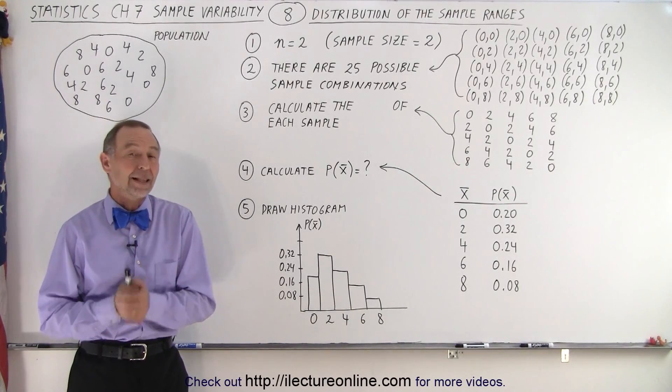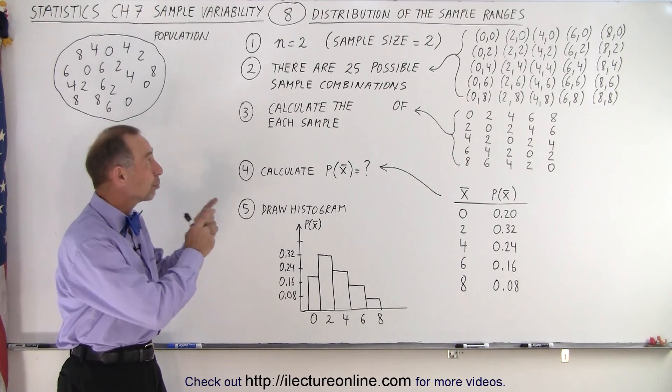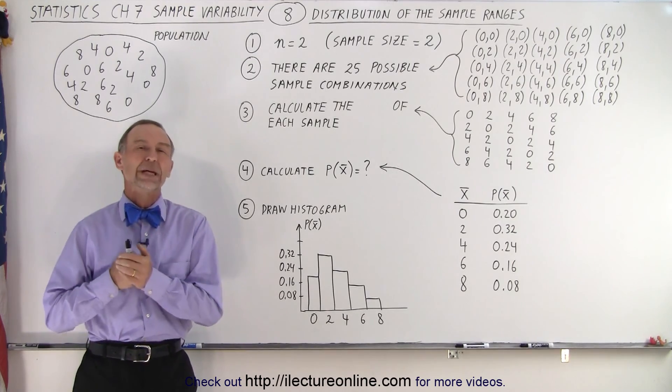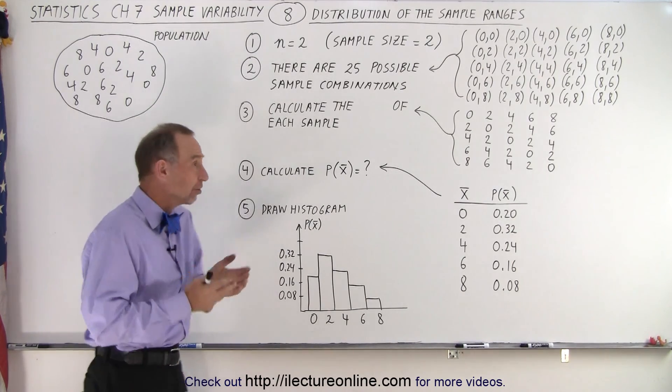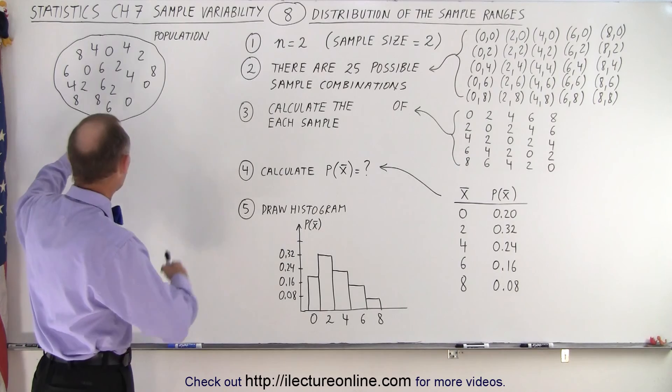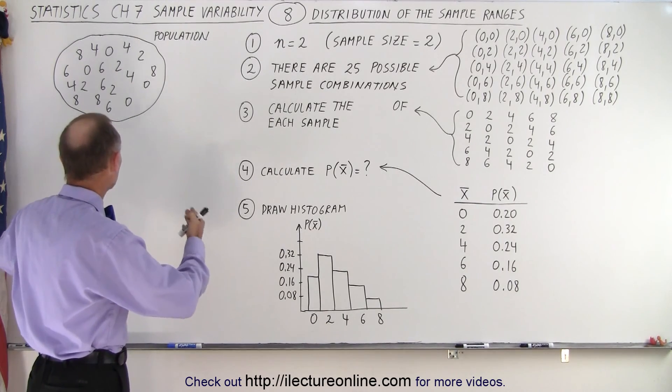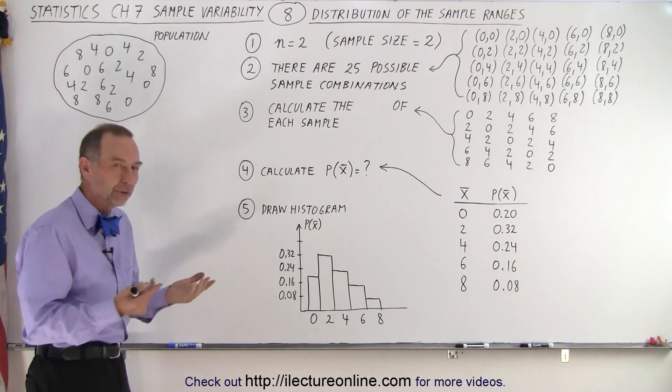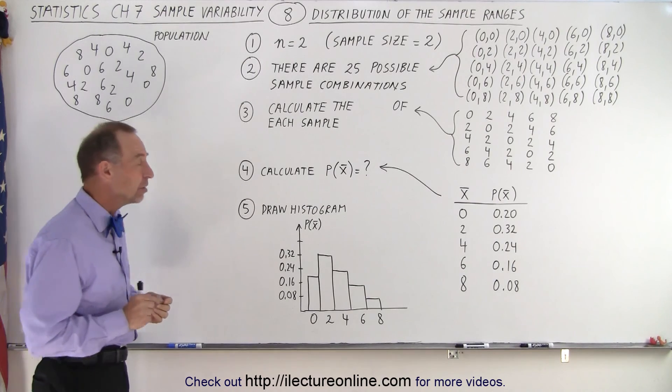Welcome to iLectureOnline. Now let's take a look at the distribution of the sample ranges. We're taking the same population as we did in the previous video, a population that consists of 0s, 2s, 4s, 6s and 8s. There's multiples of each, the same number of each.